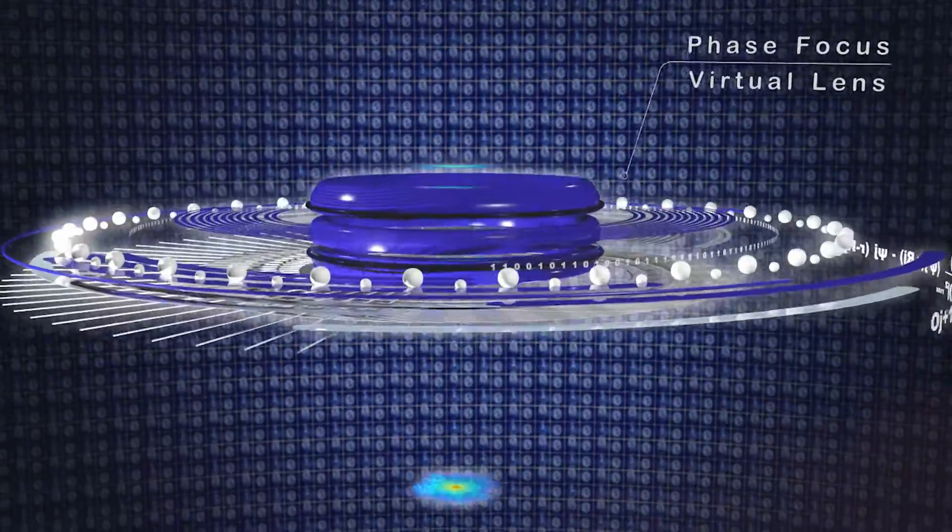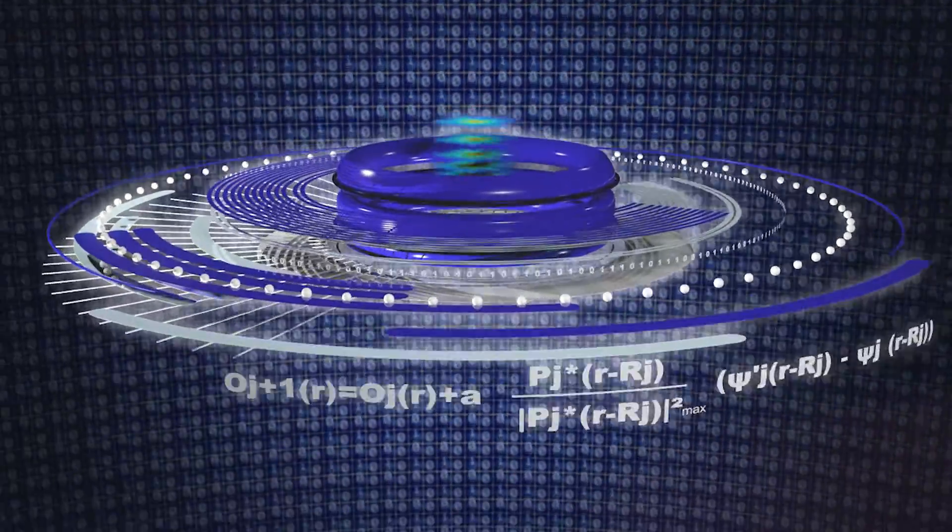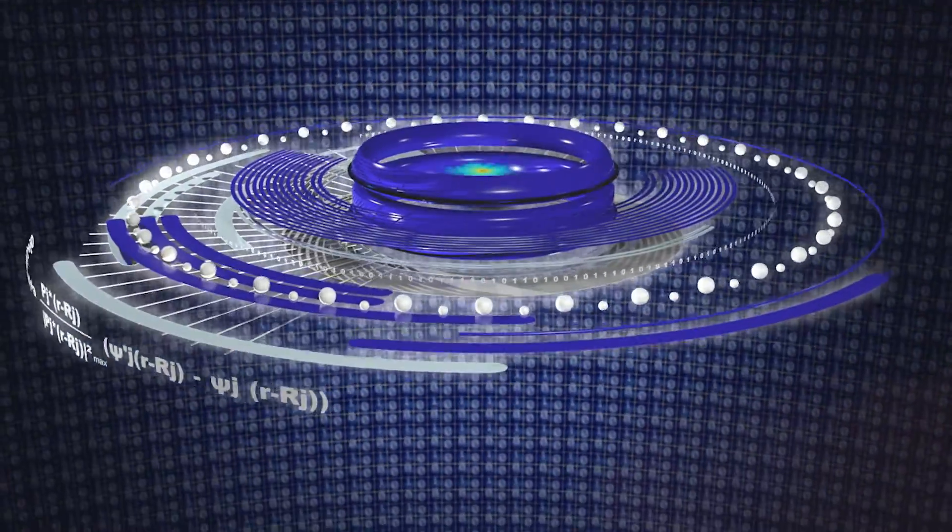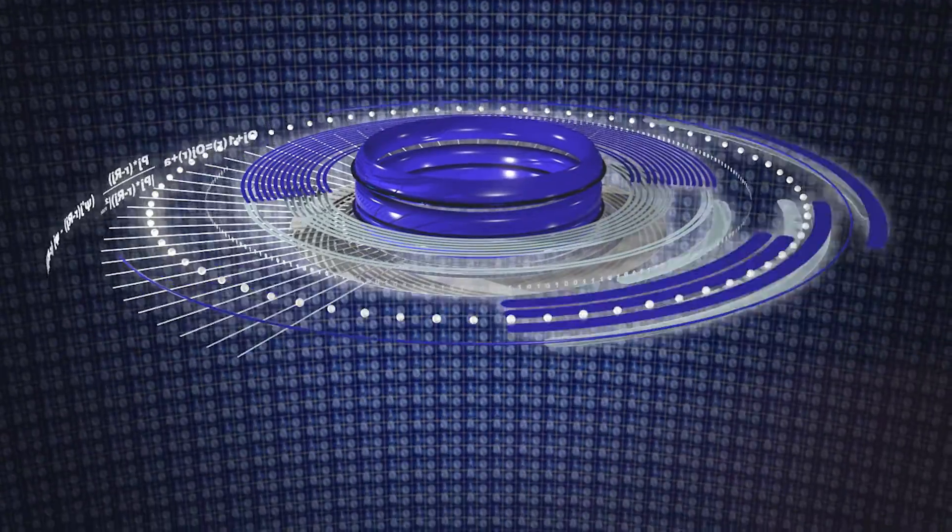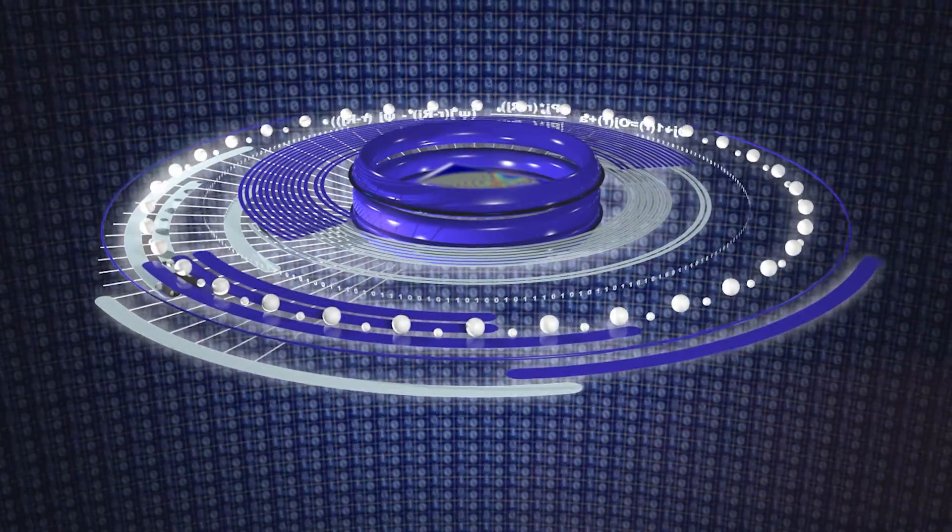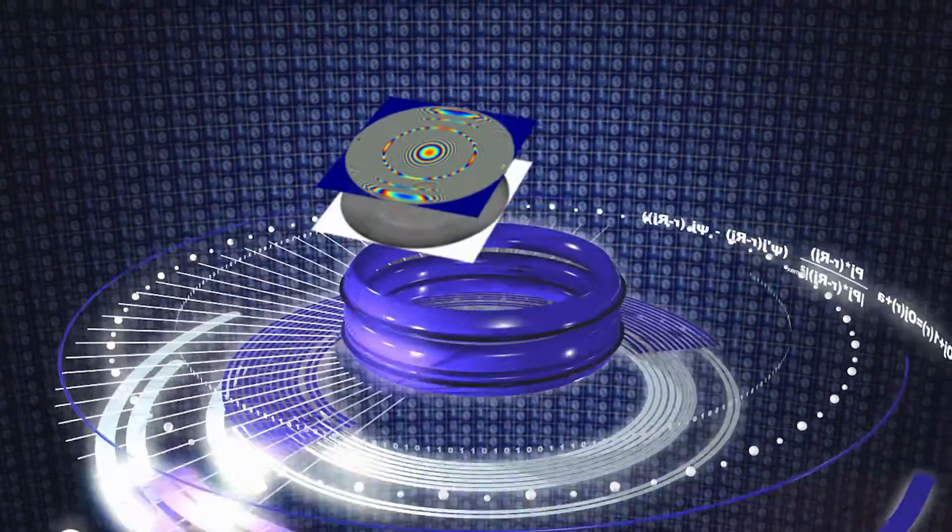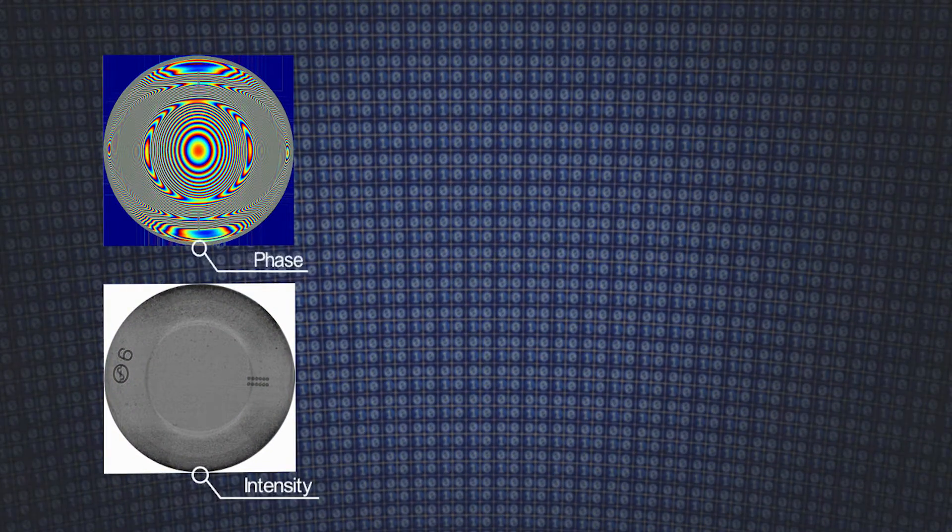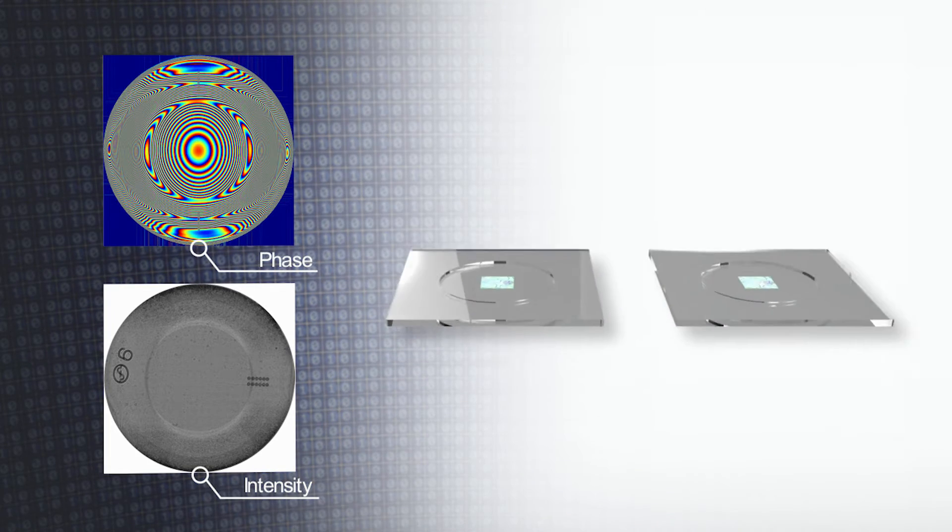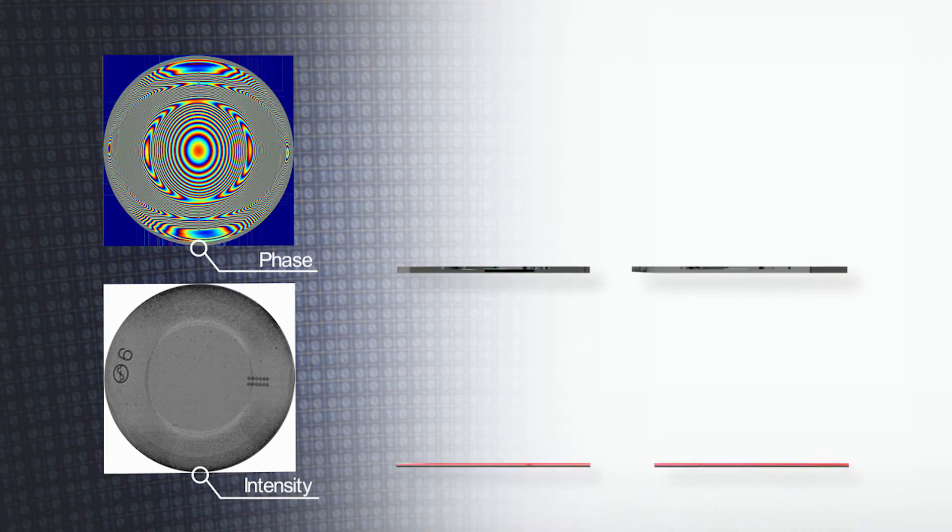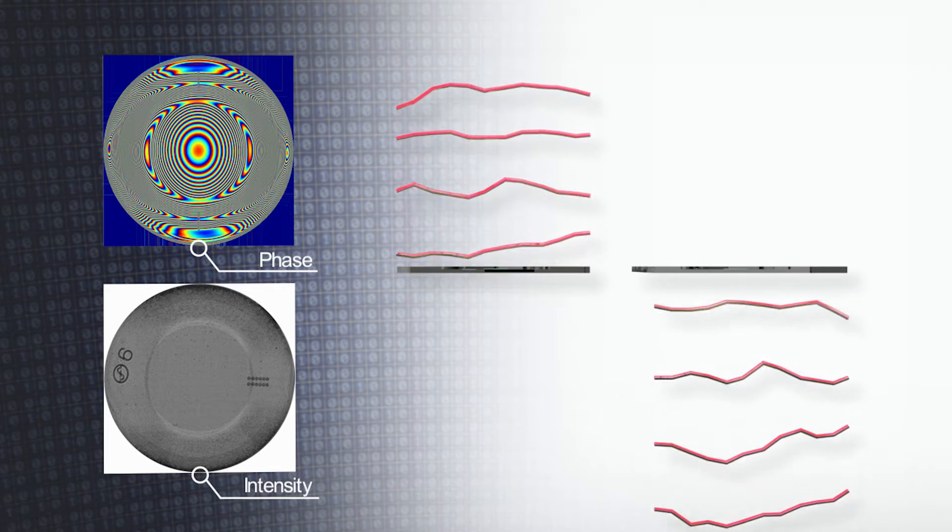The diffraction patterns are processed by a computer algorithm to produce quantitative intensity and phase images of the sample. The intensity image is equivalent to a conventional brightfield image, whilst the phase image is a quantitative map of the beam's delay as it's transmitted or reflected by different parts of the sample.